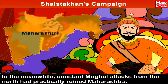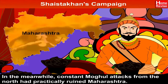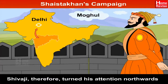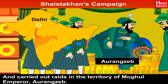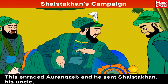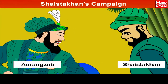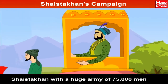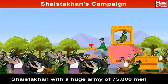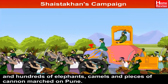In the meantime, constant Mughal attacks from the north had practically ruined Maharashtra. Shivaji therefore turned his attention northwards and carried out raids in the territory of Mughal Emperor Aurangzeb. This enraged Aurangzeb and he sent Shaistakhan, his uncle, to deal with Shivaji and teach him a lesson. Shaistakhan, with a huge army of 75,000 men and hundreds of elephants, camels and pieces of cannon, marched on Pune.